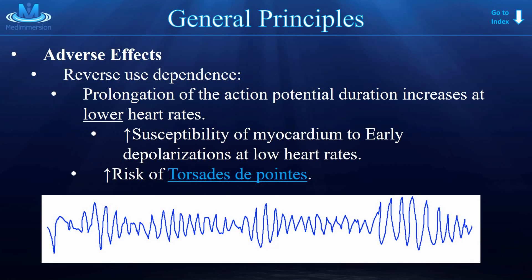As for adverse effects as a class, these drugs are famous because of the reverse use dependence principle, which means their prolongation of the action potential duration increases at lower heart rates. That's not where we actually want the drugs to work — we want them to work at high or fast heart rates, tachycardias. This increases the susceptibility of the myocardium to early depolarizations at low heart rates, which is why these drugs aren't wildly popular. A huge side effect you have to know is that they increase the risk for Torsades de pointes.